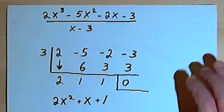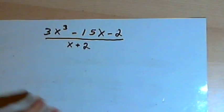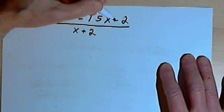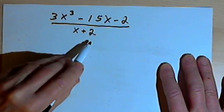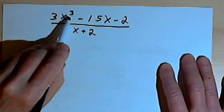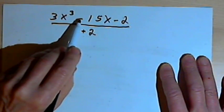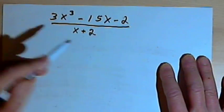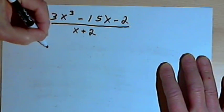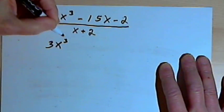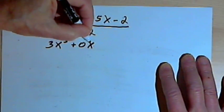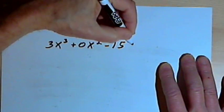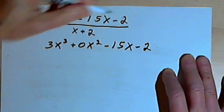Now let's look at a variation on this. Here's another problem. I've got 3x to the third minus 15x minus 2, dividing that by x plus 2. Now you notice I go from an x to the third to an x. I don't have an x-squared power. Just as with algebraic long division, we want to have every power represented, so we're going to put in a kind of a placeholder. I'll rewrite this as 3x to the third plus 0x-squared minus 15x minus 2.